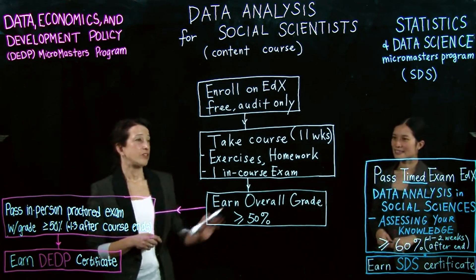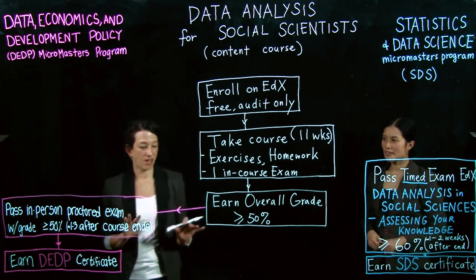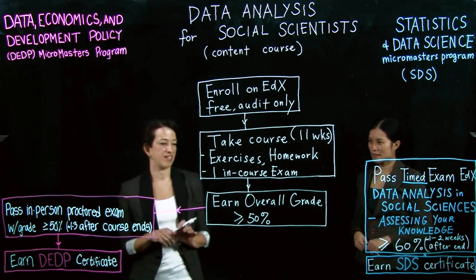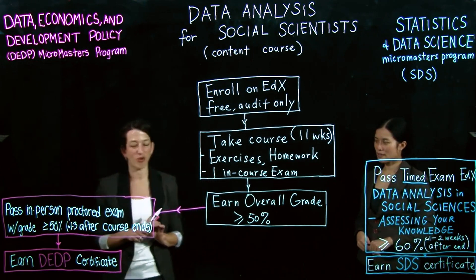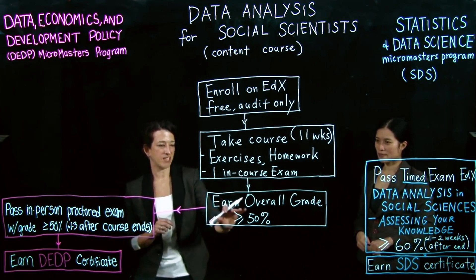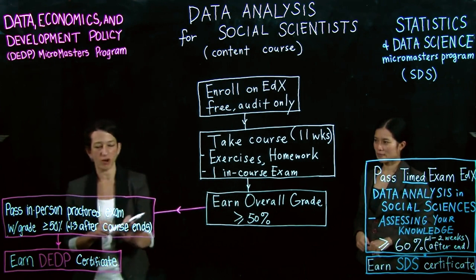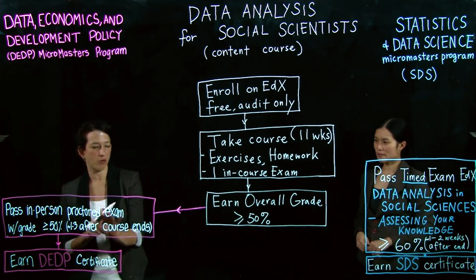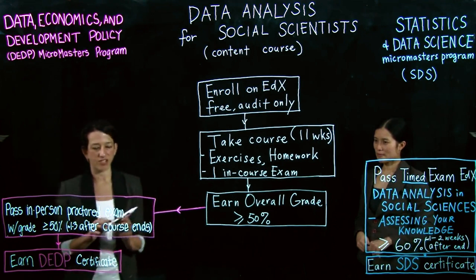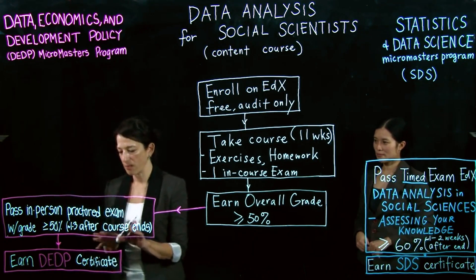Conditional on all of these steps, I'll be explaining the extra steps you need to take if you're interested in earning the certificate in Data Economics and Development Policy. If you have passed the content course with a grade of 50% or more, you will need to also take an in-person proctored exam and pass that exam by earning a grade of 50% or more.